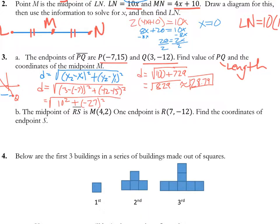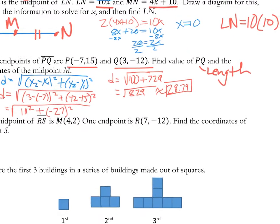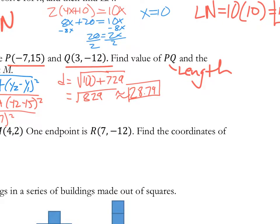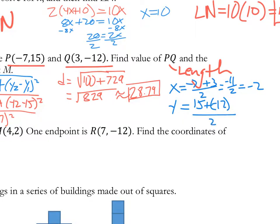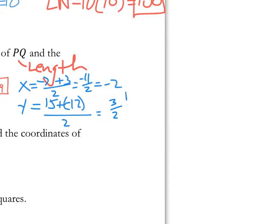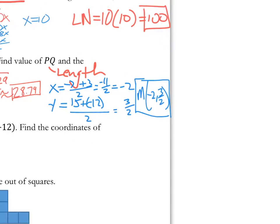Now to find the midpoint — the midpoint is the average of the coordinates. For the x-coordinate: average negative 7 and 3, giving negative 4 divided by 2, which is negative 2. For the y-coordinate: average negative 12 and 15, giving 3 divided by 2, or 3 halves. So the midpoint is at (negative 2, 3/2). Stay away from decimals if possible.